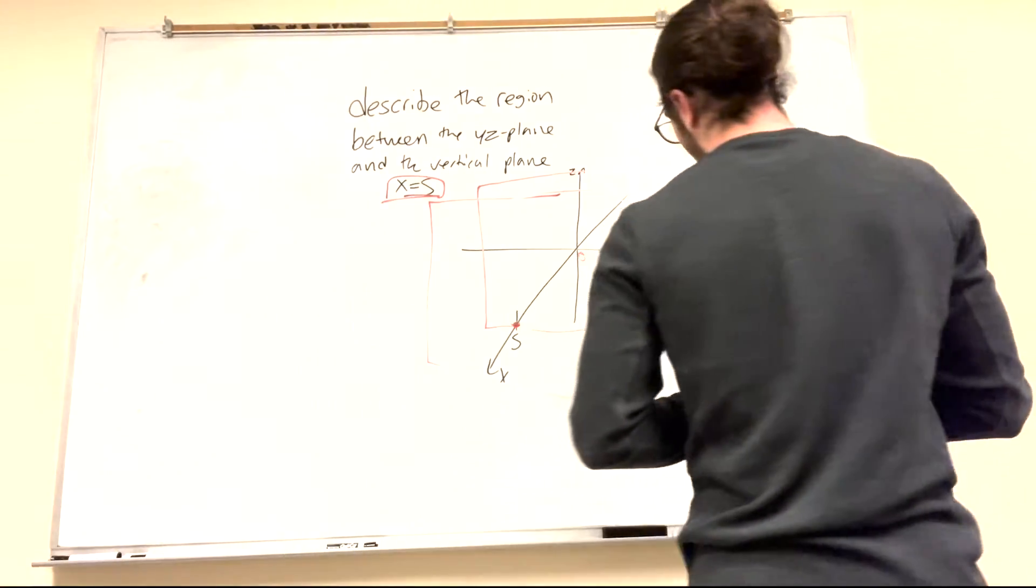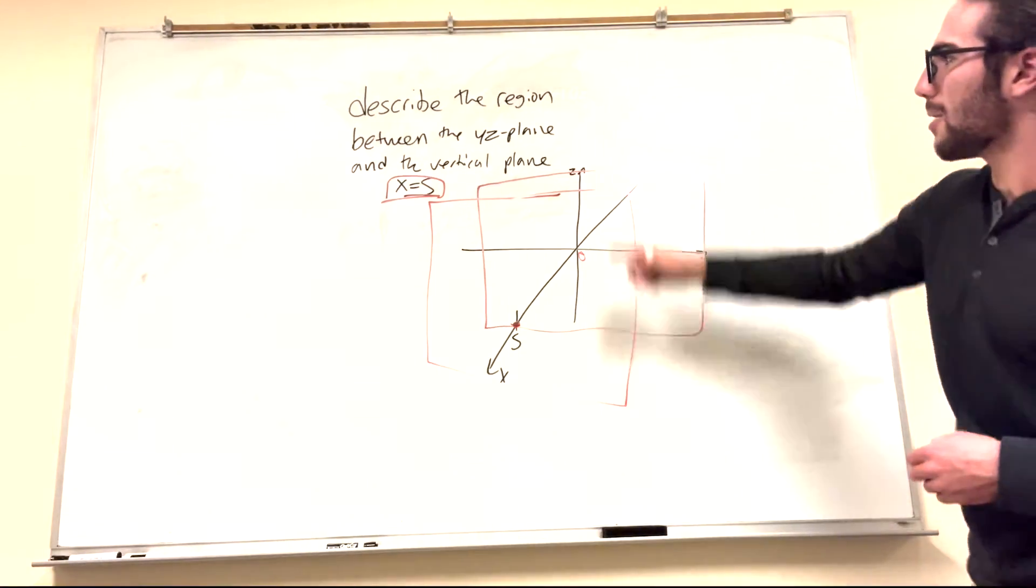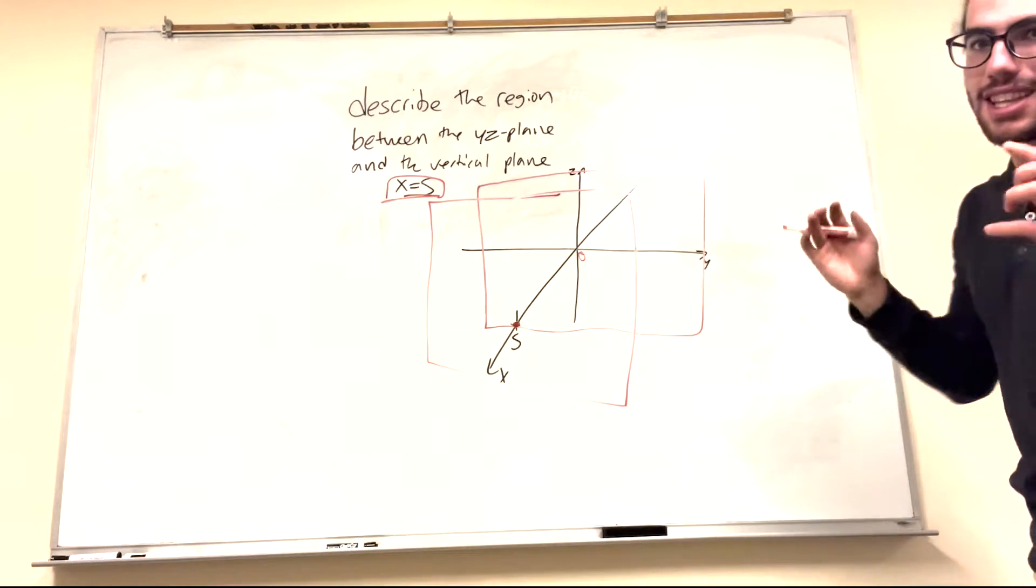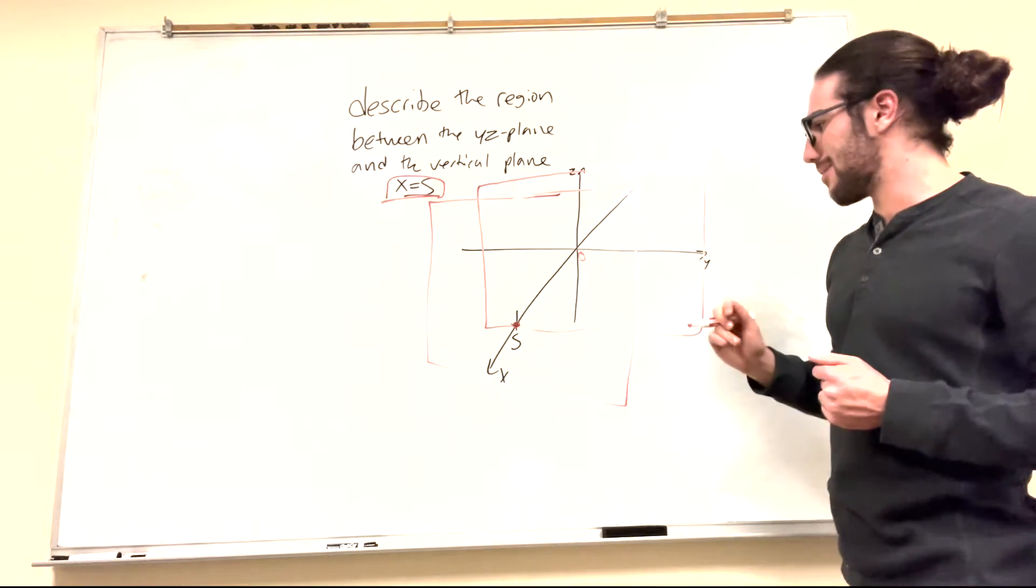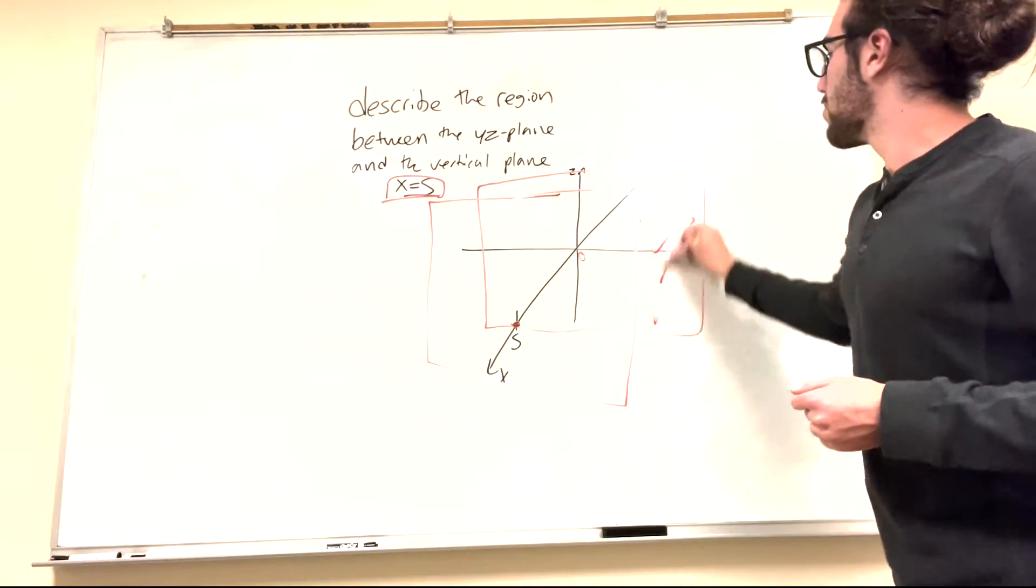So what do you got here? Well, you have this infinite area in between that goes up forever and out forever, but it's limited between x equals 0 and x equals 5. So it's all that area. How do we describe it in a term?